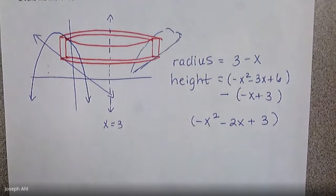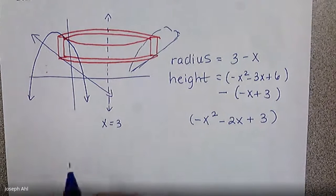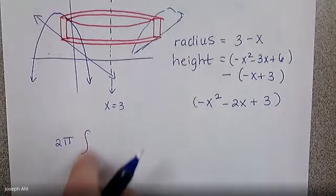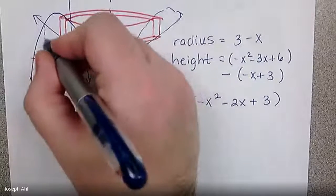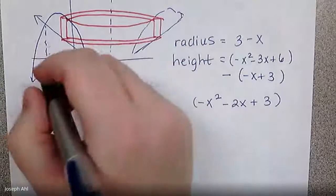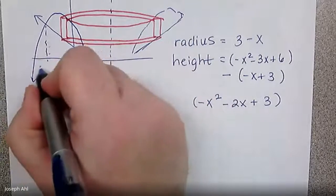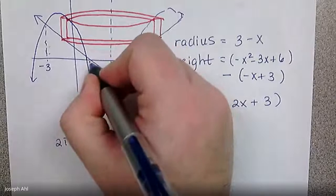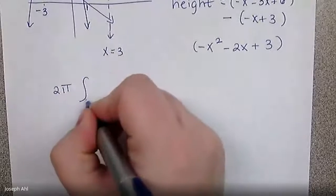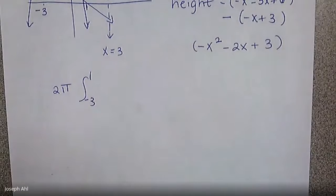And now kind of putting all the pieces together, we are using our shell method. So it's two π from, I don't have those bounds yet, I should really find these points of intersection here, just to save us some time, you can calculate those using your calculator, you can use some algebra to get there, it's up to you. It is going to be from negative three to positive one.